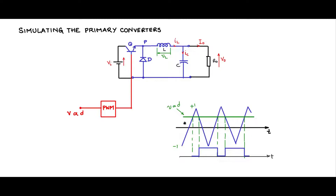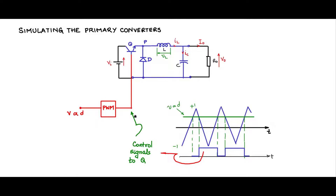As this control voltage moves up and down you will see a modulation happening in the pulses, and these pulses will be used as control signals for Q. Later on I will discuss in detail what goes into making the PWM so that you can build other PWM blocks and techniques.